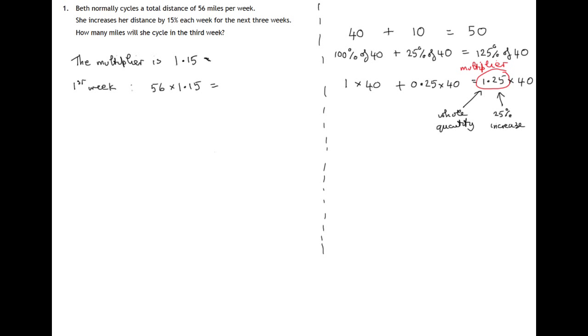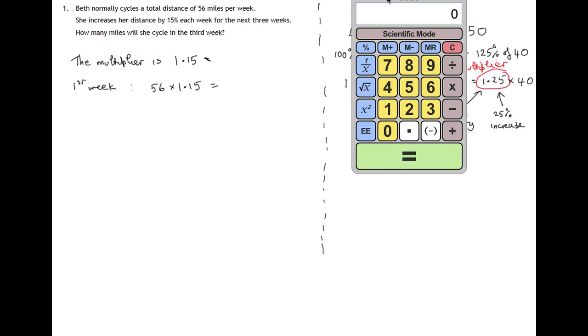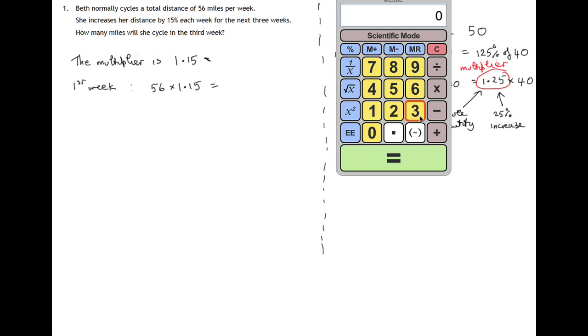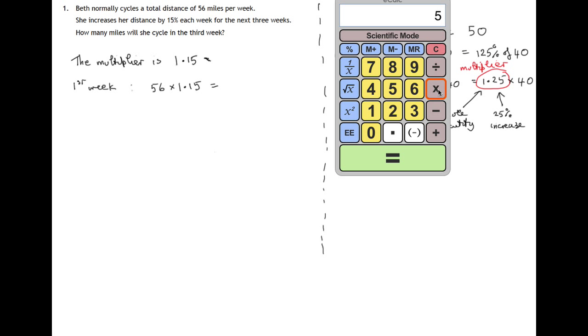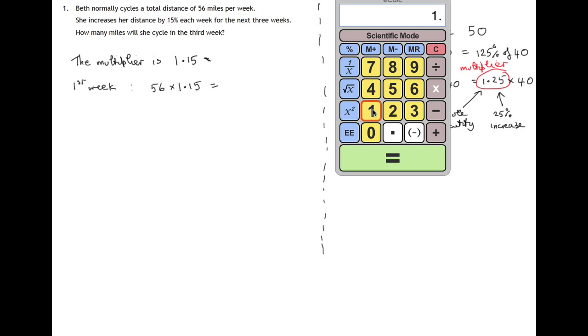We can easily work that out on our calculator. 56 times 1.15 gives us 64.4.